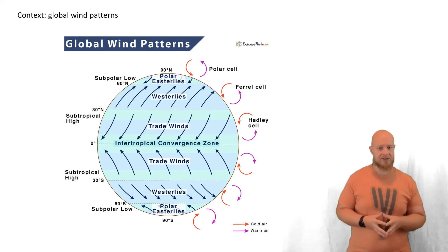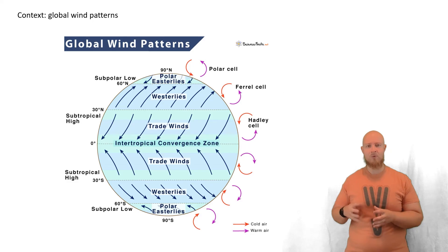The ferrel cell's deflection results in the westerlies, because the air masses, the wind, is moving in from the west. And finally, the deflection of the polar cell surface winds result in the polar easterlies, again because the wind is moving in from the east.